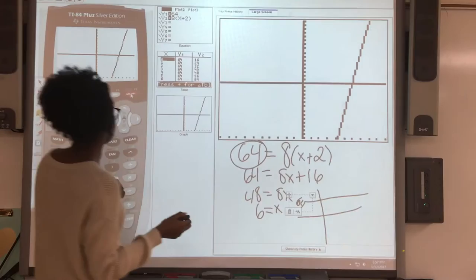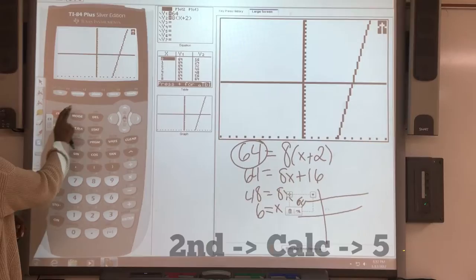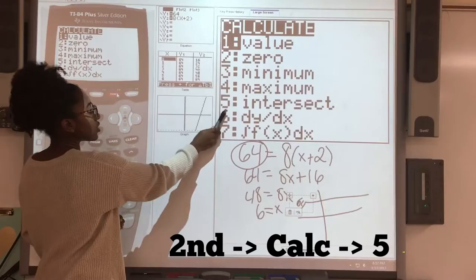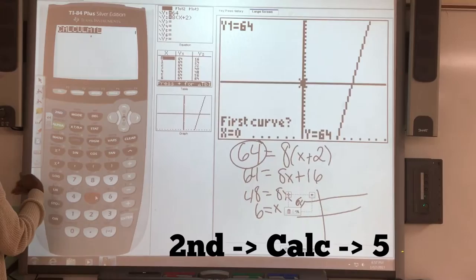Now we see both equations and where they intersect. To find x equals 6, you go to 2nd, trace, and you're presented with all of these options. You want to know where they intersect because that's where they equal each other, and that would give you the answer. So 2nd, trace, 5.